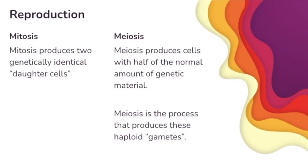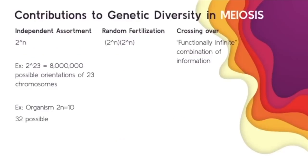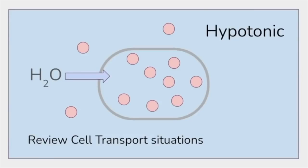Speaking of cell division and reproduction, mitosis is going to produce two genetically identical daughter cells. Meiosis is going to produce cells with half the normal amount of genetic material, generally going from diploid to haploid cells. These are gametes or sex cells. There's a lot of different steps that contribute to genetic diversity. We have independent assortment where we have different possibilities of orientations of how the chromosomes could line up. There's random fertilization, and during crossing over, we can have a bunch of different combinations of information. Familiarize yourself with errors or consequences if some steps in the process of meiosis go wrong. Make sure to review cell transport situations where water moves by osmosis from areas of high water potential to areas of low water potential.